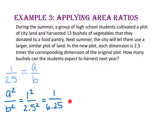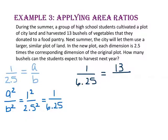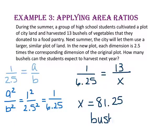Let's use the ratio of the areas in a proportion to find how many bushels they should expect next year. Since the numerator represents the original plot, we put 13 — the original bushels — in the corresponding part of our ratio, and X for next year's harvest. Using the cross product property: 1 times X equals 6.25 times 13, or 81.25. So the students should expect to harvest 81.25 bushels of vegetables.